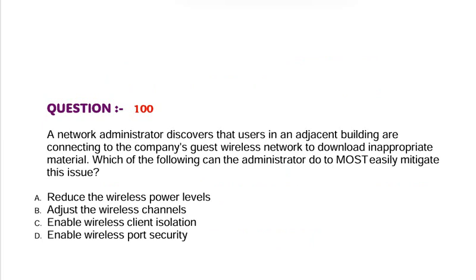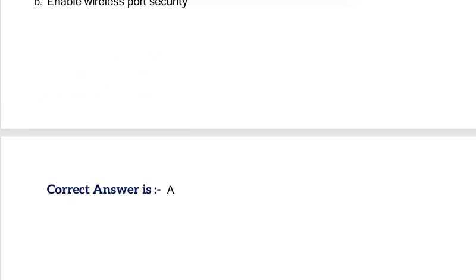Question: A network administrator discovers that users in an adjacent building are connecting to the company's guest wireless network to download inappropriate material. Which of the following can the administrator do to most easily mitigate this issue? Option A, Reduce the wireless power levels. Option B, Adjust the wireless channels. Option C, Enable wireless client isolation. Option D, Enable wireless port security. Correct answer is Option A.